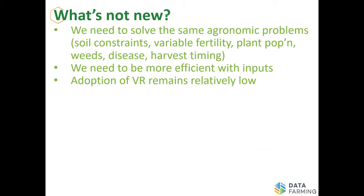If I start with what's not new — we need to solve the same agronomic problems. Nothing's really changed there. We've got soil constraints, variable fertility, plant populations changing with different soil types, and we're still managing weeds, pests and diseases. There's a lot of interest in harvest timing — when to swath canola, what the moisture content will be — because farms have essentially doubled in the last 10 years as the number of farmers has halved. So our farms are getting bigger, our attention to detail is getting less, we need to be more efficient with our inputs. The cost of fertiliser has gone through the roof, and we've got to make every acre pay.